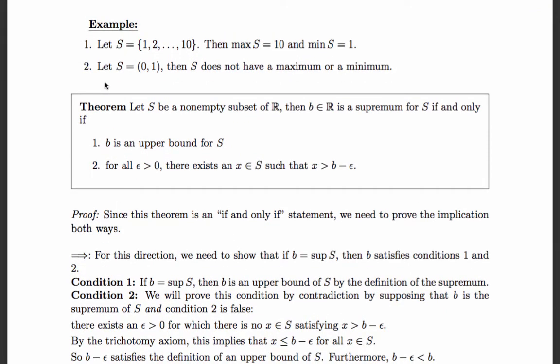For example, we know that the infimum of the set {1, 2, 3, 4, 5, 6, 7, 8, 9, 10} is 1. The minimum is also 1. 10 is the supremum. 10 is also the maximum because 1 and 10 are both contained in the set. However, the open interval (0, 1) — the set of all numbers greater than 0 and less than 1 — does not have a maximum or a minimum, though it does have an infimum and a supremum.